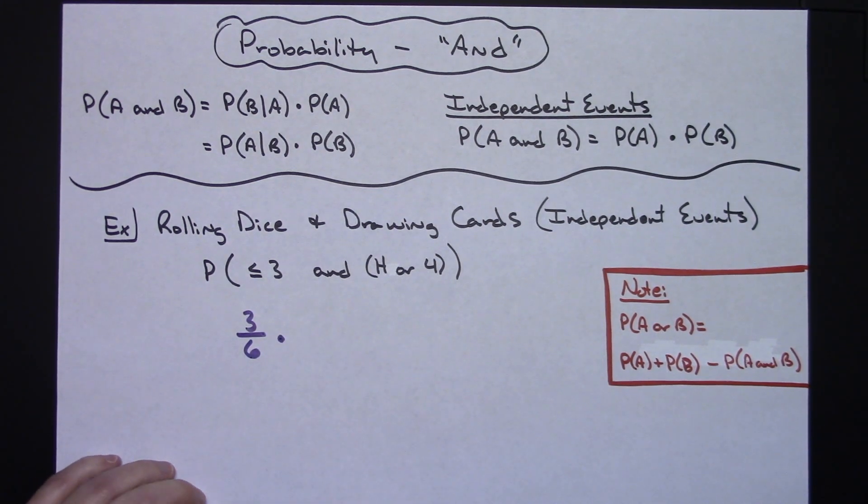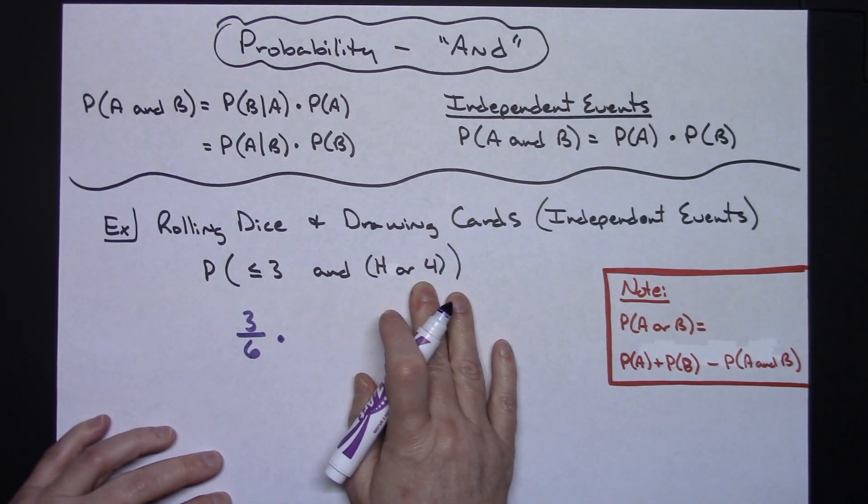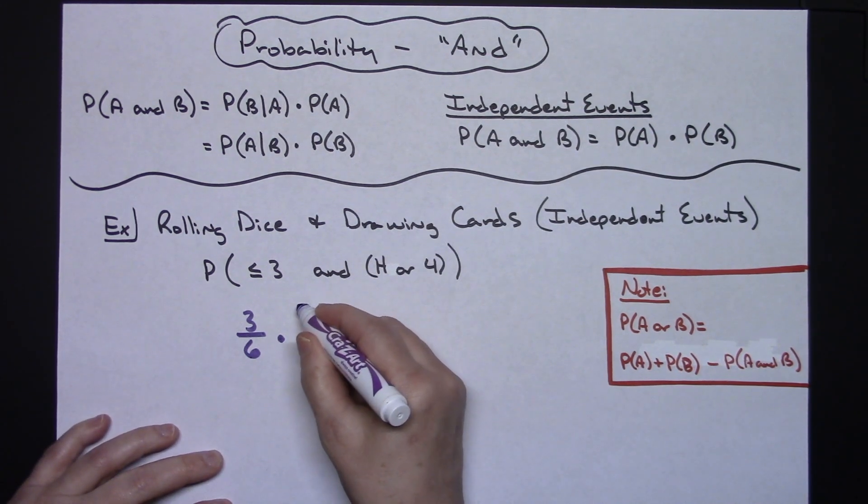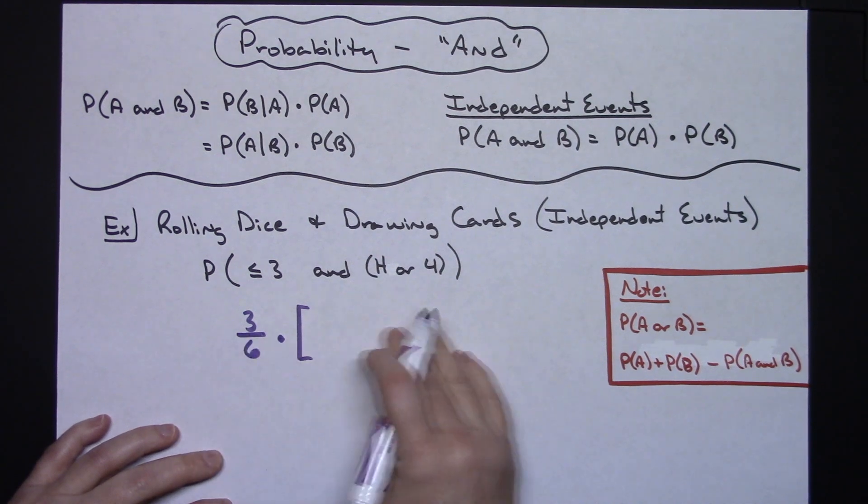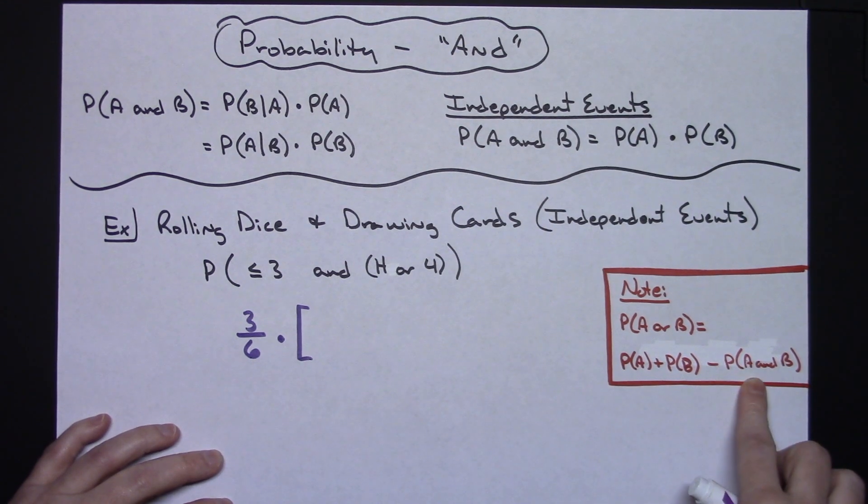Times the probability of getting either a heart or four. I'm going to put some square brackets in here at this times this quantity. Now for probability of 'or', we need the probability of A plus the probability of B minus the probability of A and B.